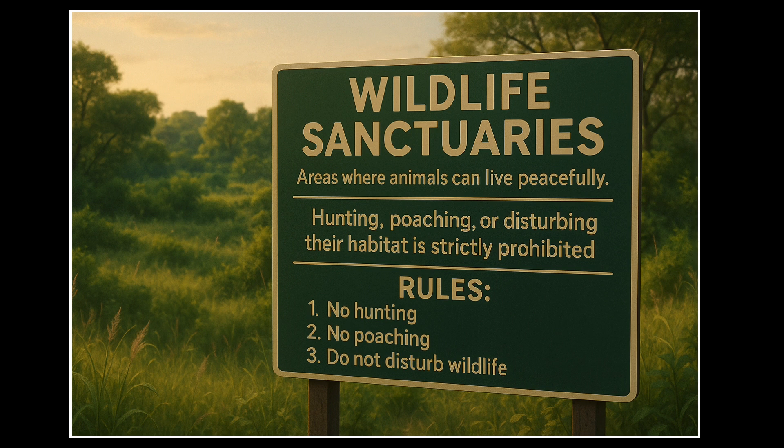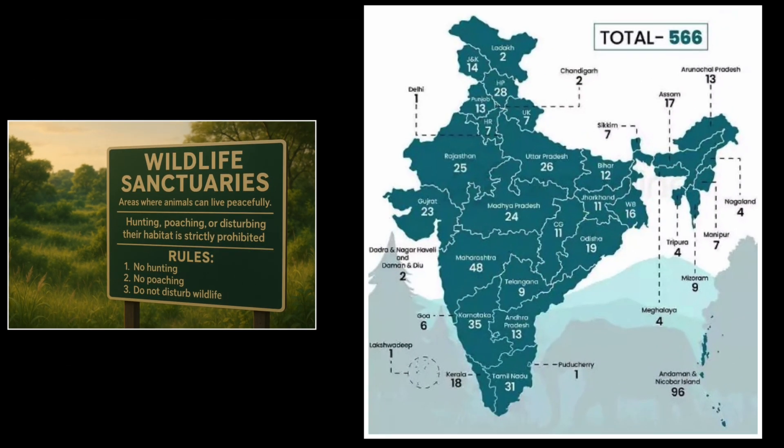First up, we have wildlife sanctuaries. These are special places where animals can live safely and peacefully — no hunting, no poaching, and definitely no messing with their homes. Right now, India has around 566 wildlife sanctuaries. This map shows where all the sanctuaries are across different states in India — take a moment to pause and check it out.